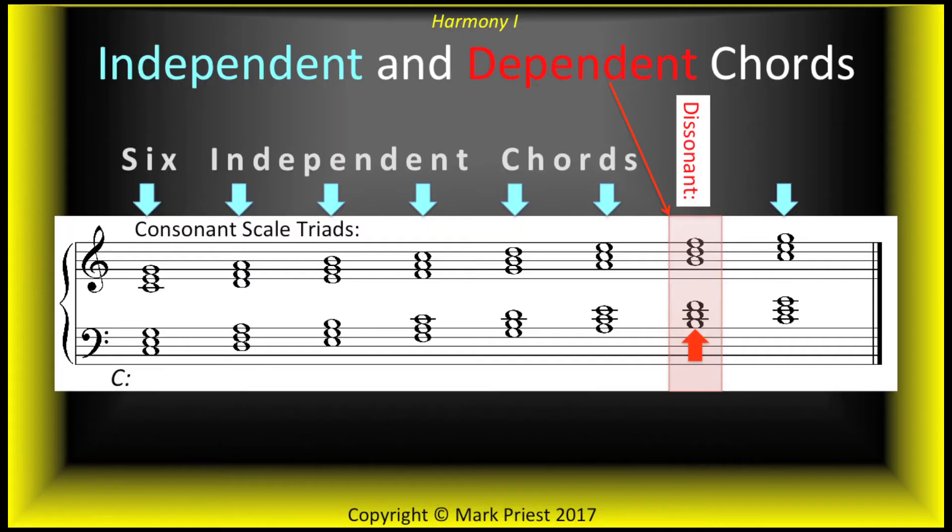Of the seven scale triads in major, six are independent chords. One is dependent. Consonance makes for independence — calm. Dissonance makes for dependence, needing consonance for resolution. Listen.